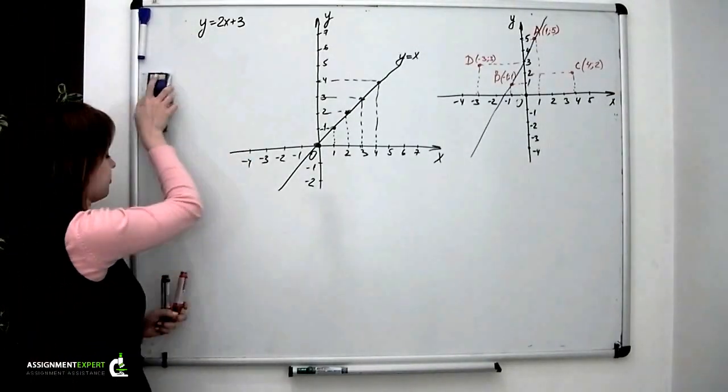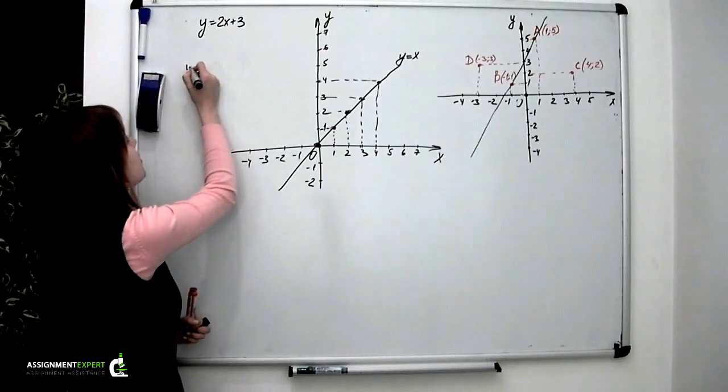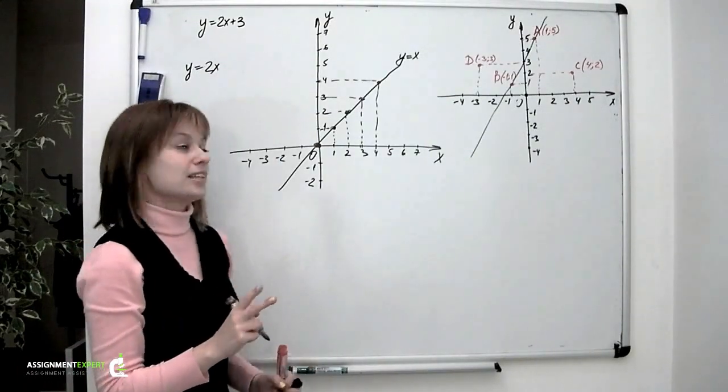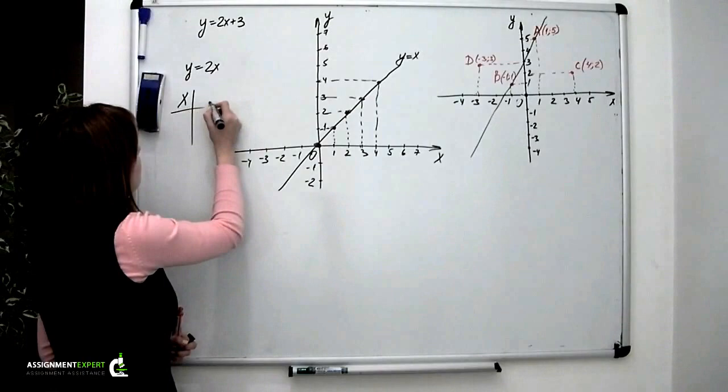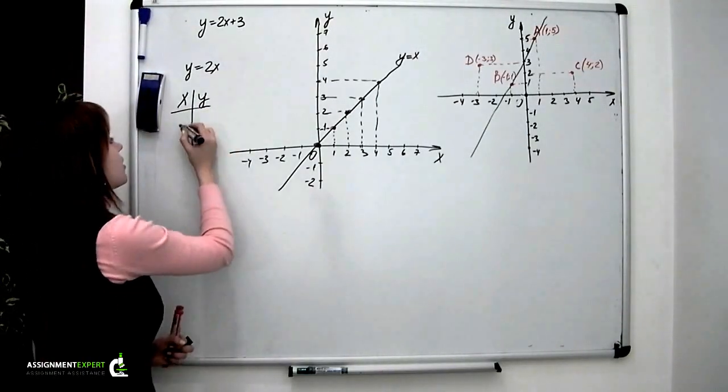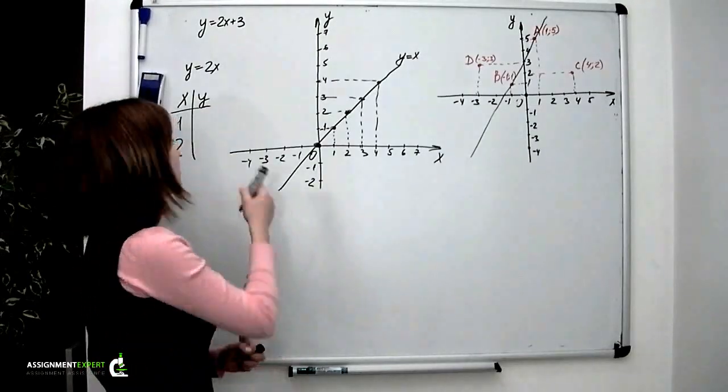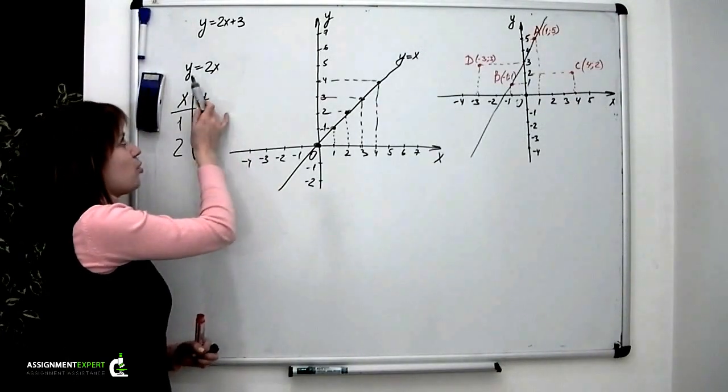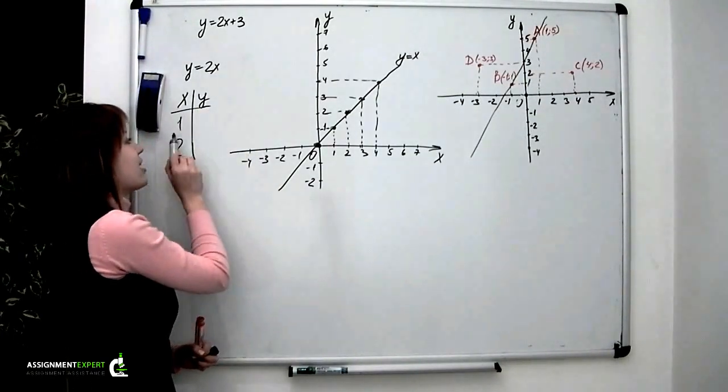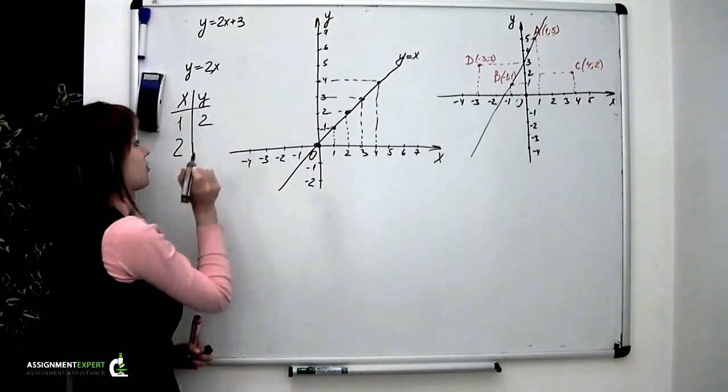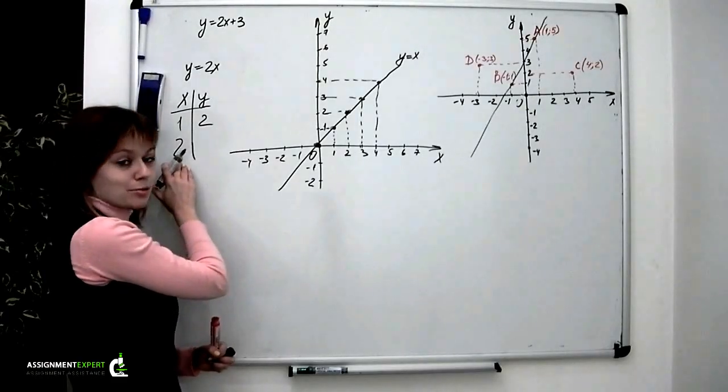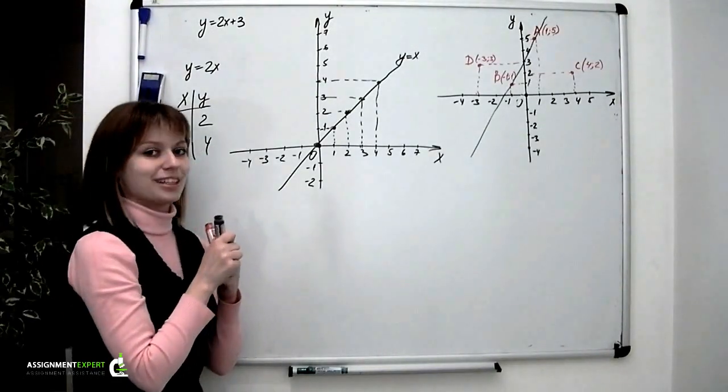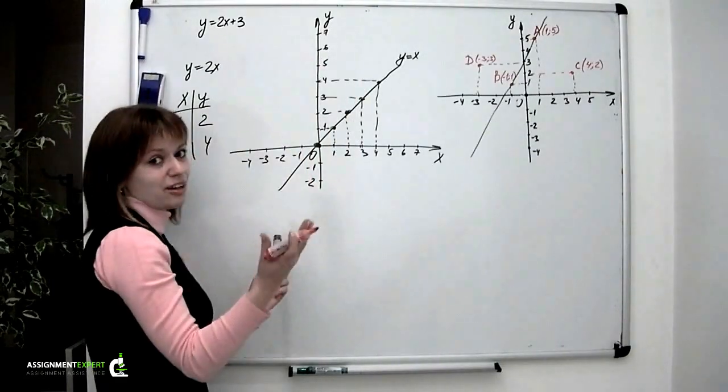Now let's take a look at another example: y equals 2x. We already know that we only need two points to draw a line. So again, we'll pick two values for the x-coordinate and calculate the y-coordinate. According to our equation y equals 2x, if x equals 1, y equals 2. And then if x equals 2, y equals 2 times 2, which is 4. Now we have two points, which is enough to graph a line.